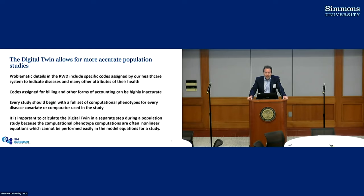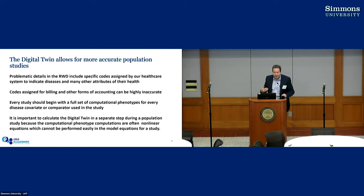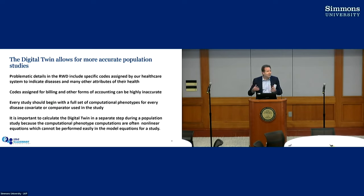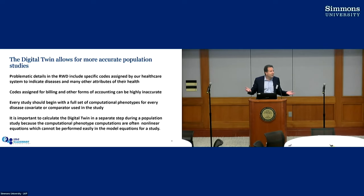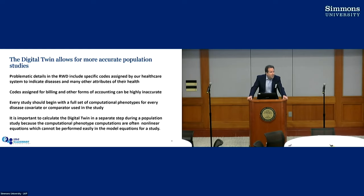Codes which we know are highly inaccurate mean that every study begins with calculating a full set of computational phenotypes for every disease, covariate, and comparator. When we do a study, you often invest in the main disease — say we're studying COVID — we'll invest a lot of time creating a computational phenotype for that. But what about all the other covariates, like diabetes? Did you invest time making a computed phenotype for that? And what about all the other 20, 40, 60 different covariates that you have?